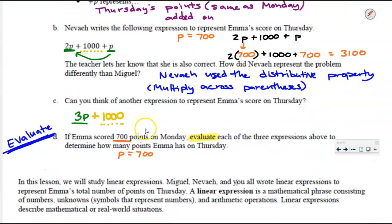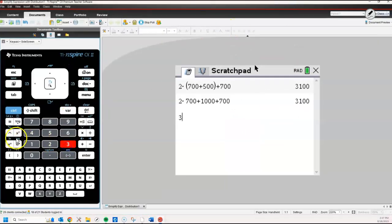And finally, what about our own version, where I say 3p+1000, but I remember that p is 700. So what do I do with that? Multiply it by 3. 3 times 7 is 21, so 3 times 700 will be 2100. 2100 plus another 1000 is equal to 3100. And one last time in our calculators, 3 times 700 plus 1000 is indeed 3100.